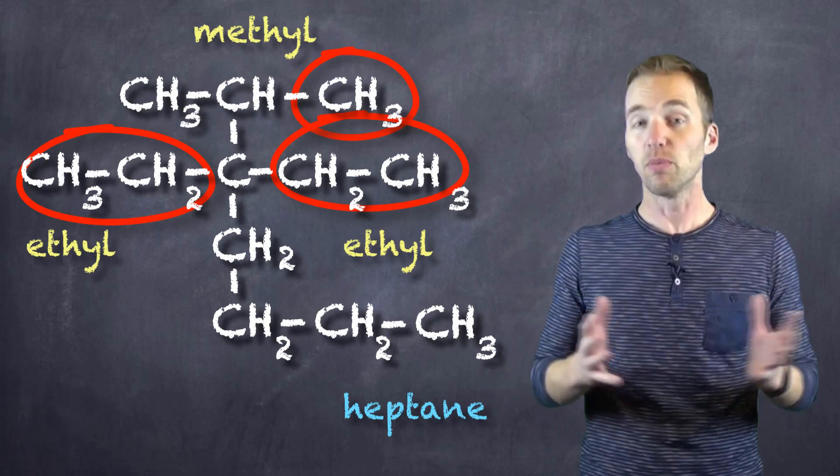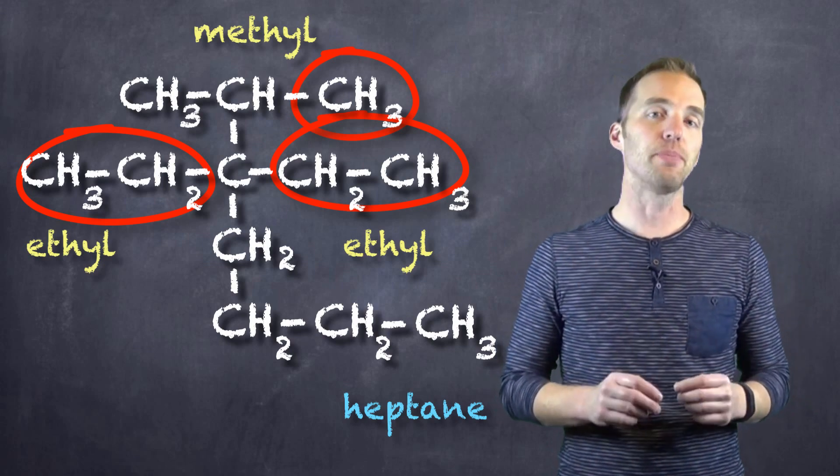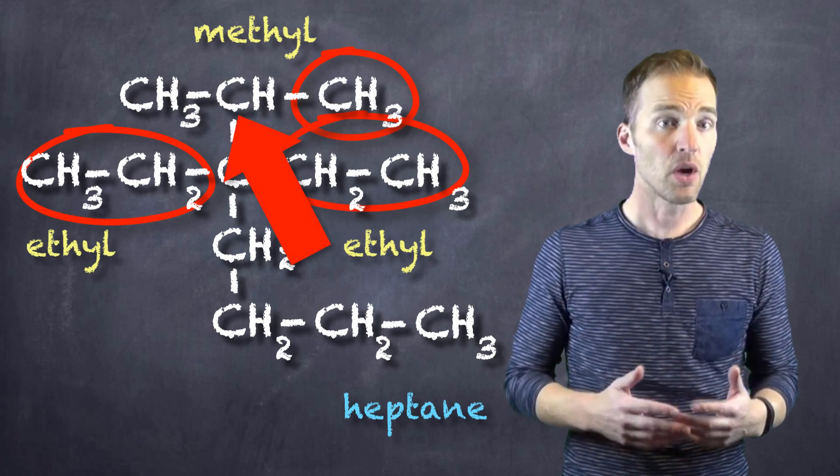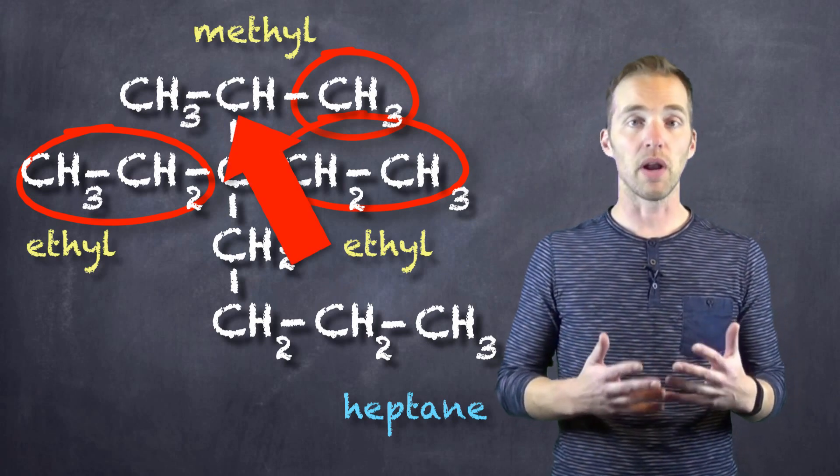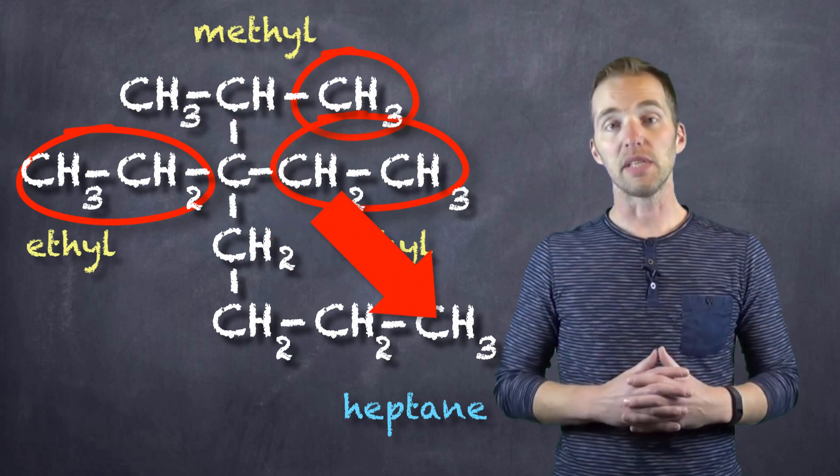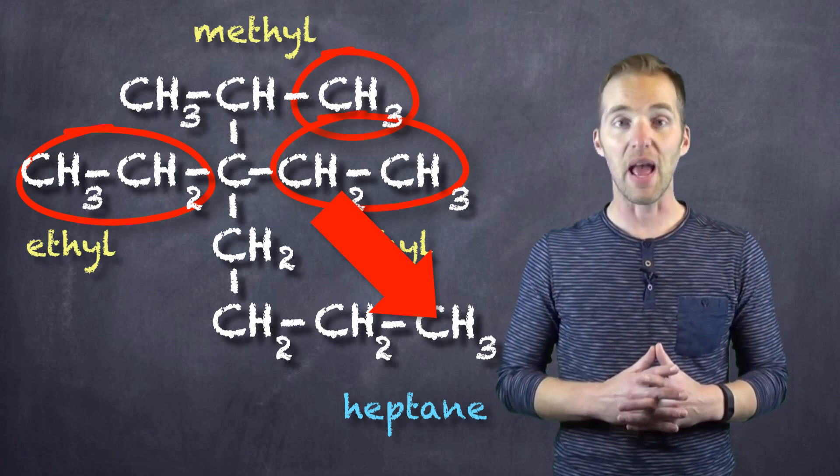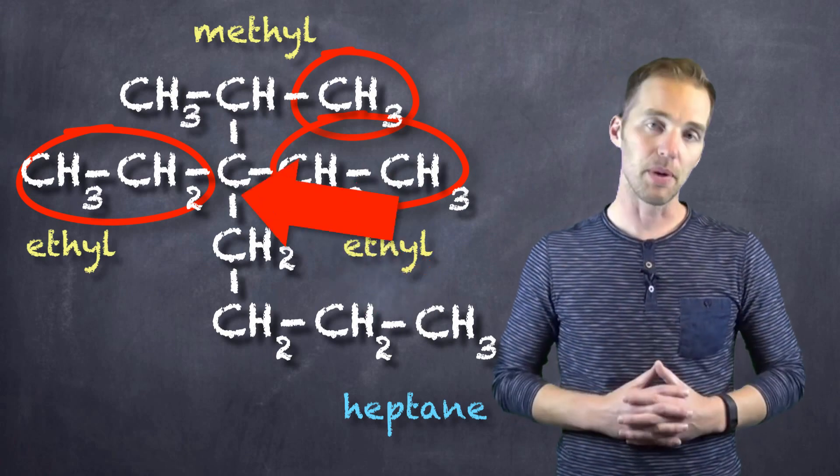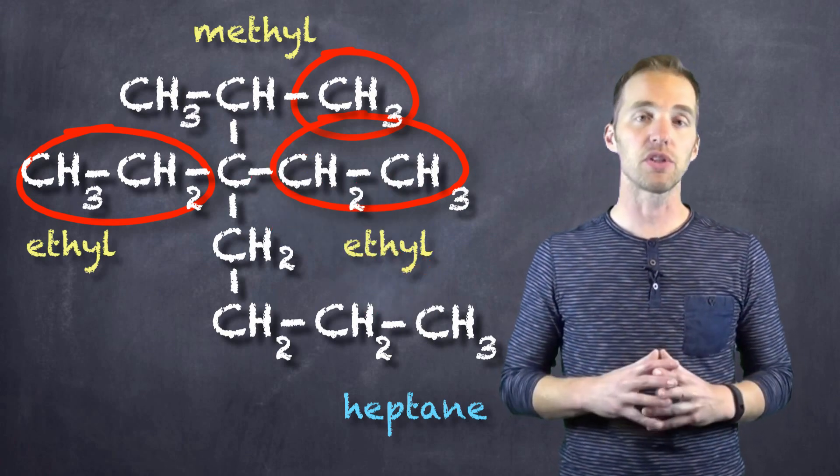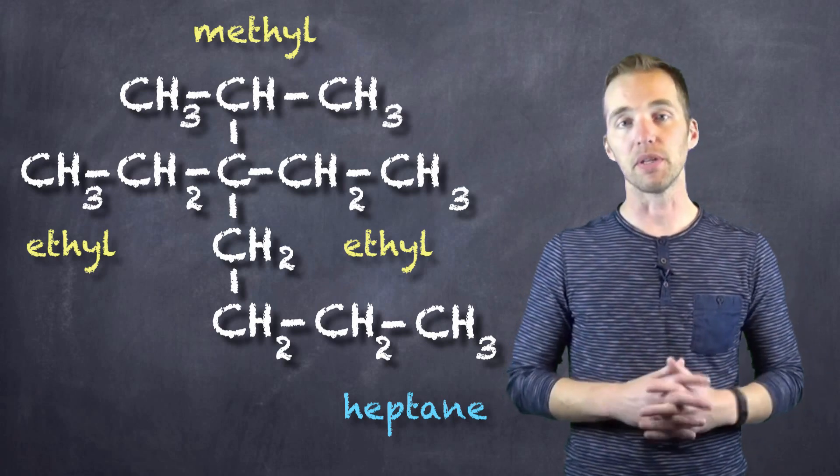Well we can see that we start numbering from what I'm going to call the top, our first branch appears on the second carbon, whereas if we branch from what I'm going to say the bottom, we are going to see that if we count from here we're going to have the fifth carbon being our first branch.